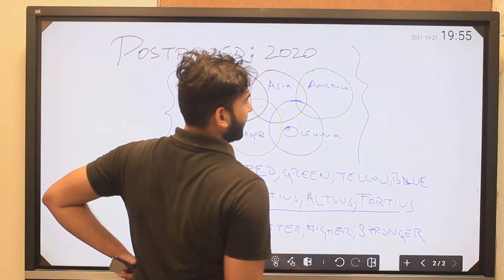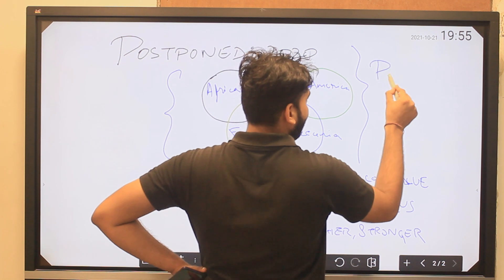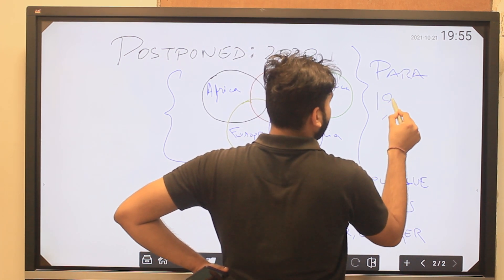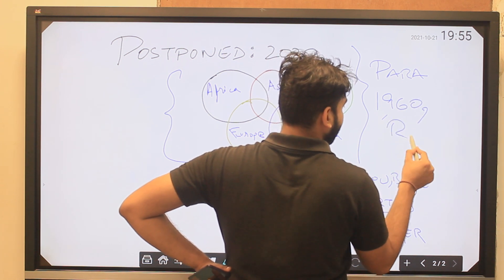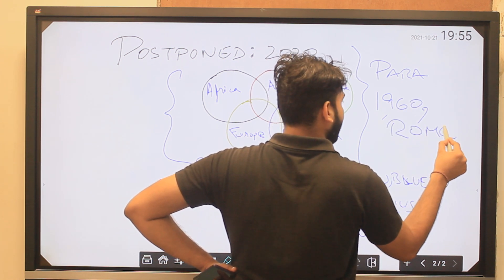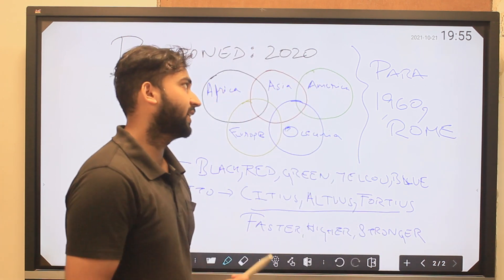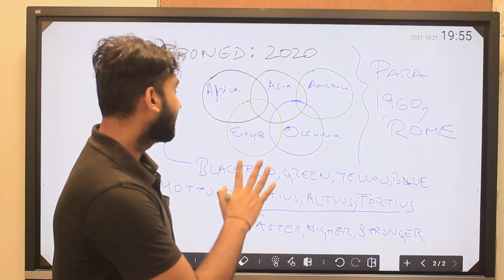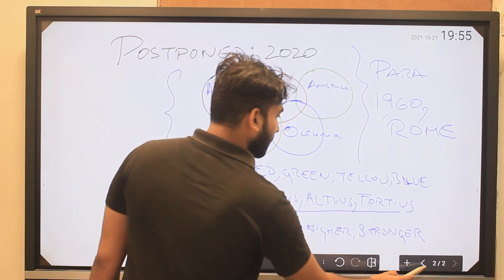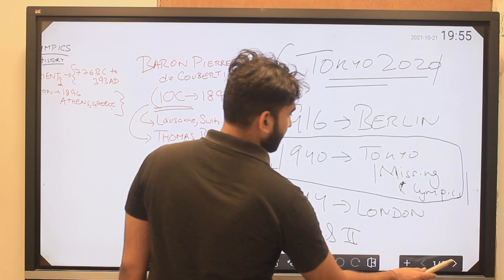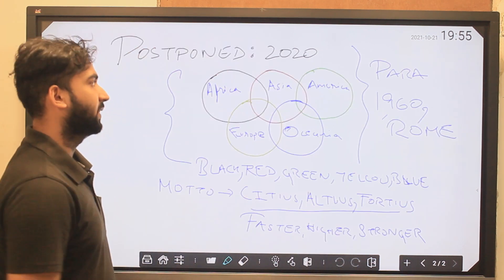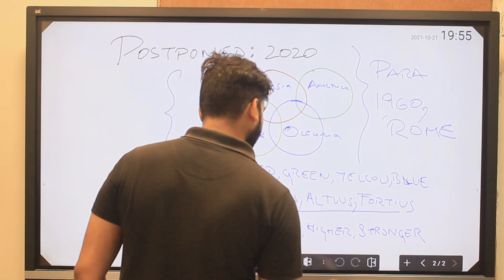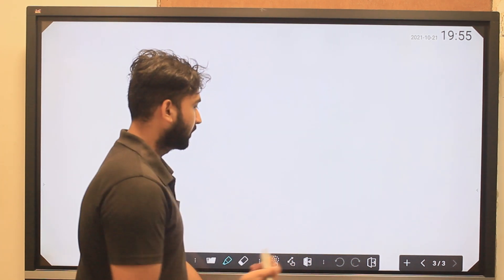One more important fact: the first Paralympics was held in 1960 in Rome — starting almost 64 years after the original Olympics in 1896. That covers the history section. Now we move forward to the Tokyo Olympics specifically.